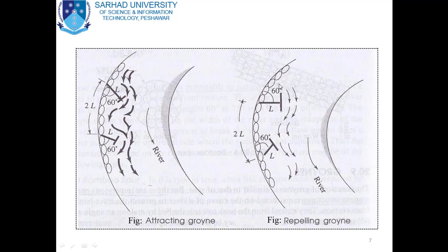Here is the repelling groin. For safety purposes, stone pitching is provided although it is not strictly necessary. The length between two adjacent groins is 2L where L is the length of the groin. They are aligned towards the upstream side at an angle of 60 to 75 degrees, because of which they form still water pockets in which silting takes place.